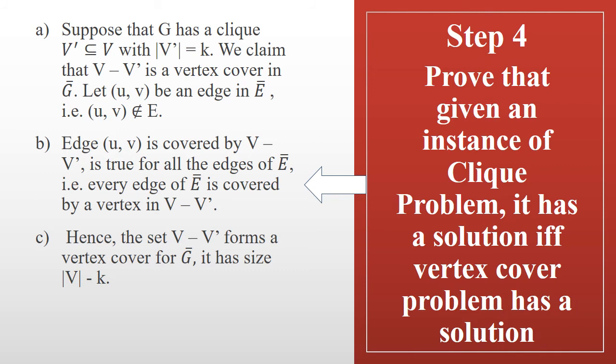For the forward direction: if (u, v) ∈ E, that implies (u, v) ∉ Ē. If (u, v) ∈ Ē, then at least u or v does not belong to V' — the clique — because every pair in V' is connected by an edge in E. Therefore, at least one of u or v is in V − V'. So the edge (u, v) is covered by V − V', which has size |V| − |V'|. Hence if G has a clique of size k, then Ḡ has a vertex cover of size |V| − k, since in any edge at least one vertex belongs to V − V'.